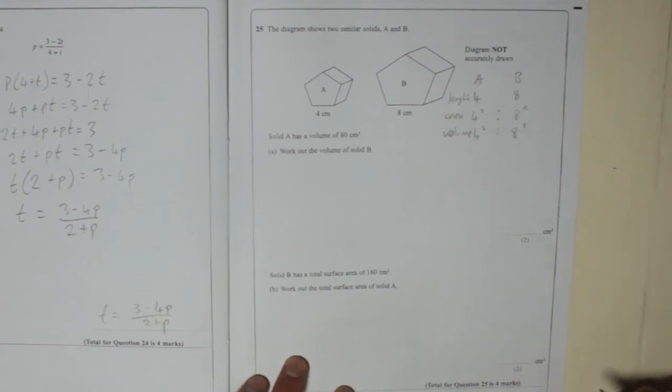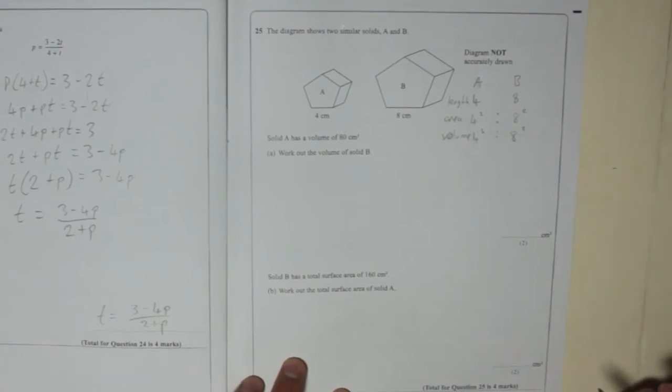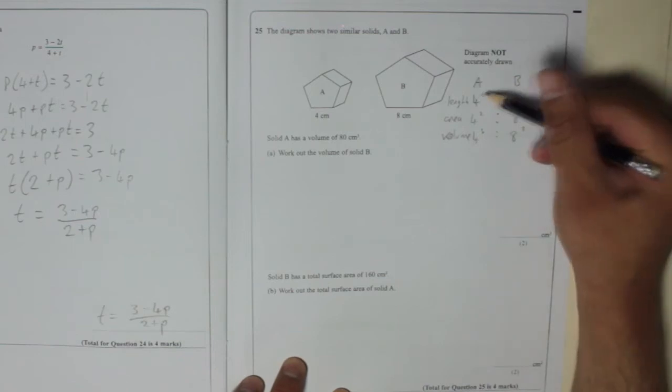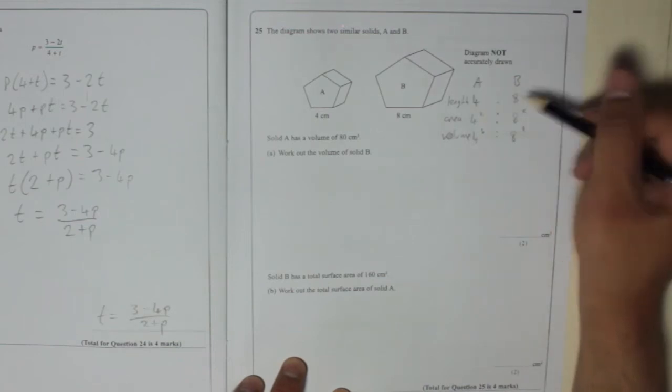Now, it's a lot easier if you work it out into its lowest terms. So rather than 4 to 8, that would cancel down to 1 to 2.